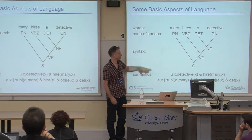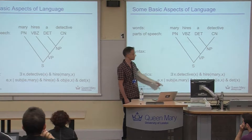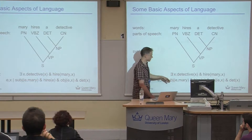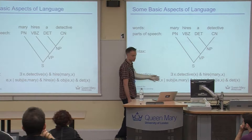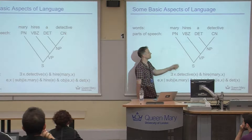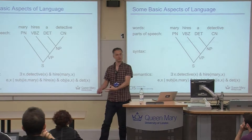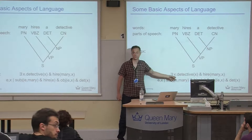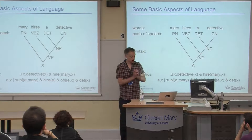Computational linguists spend a lot of time working out how to transfer words into syntactic structures, then into semantic representations — you might use first-order logic-style formalisms, which tell you that a sentence means 'there is something which is a detective and is being hired by Mary.' This tells you about the structure of what's going on: who's the subject, the hiring event, who's doing it, who's being hired. There's a lot of information in words, but a lot of processing is needed to get to the underlying meaning.